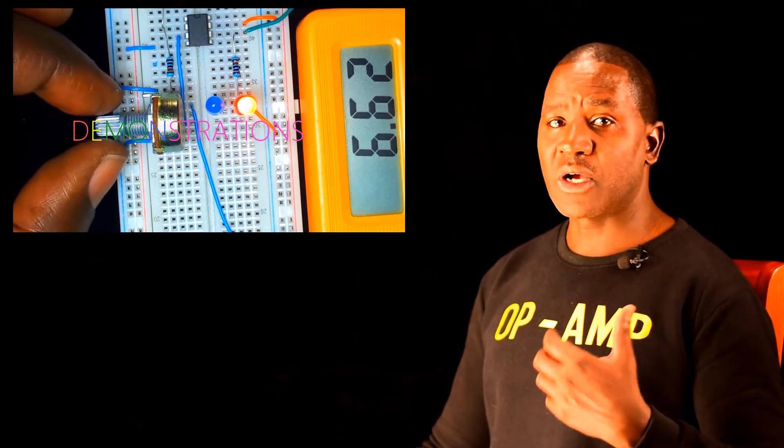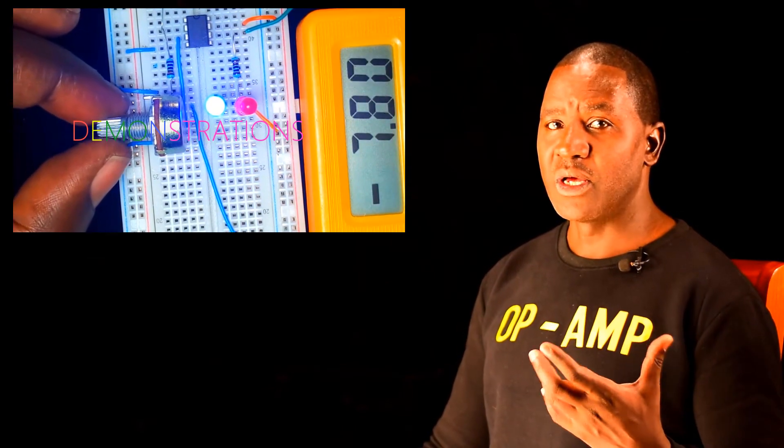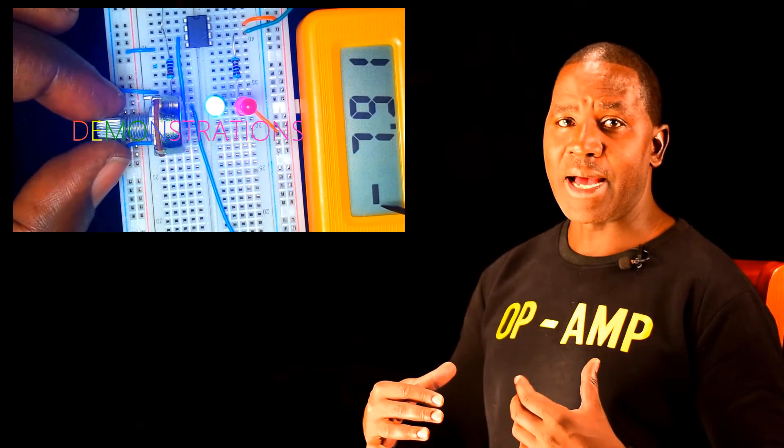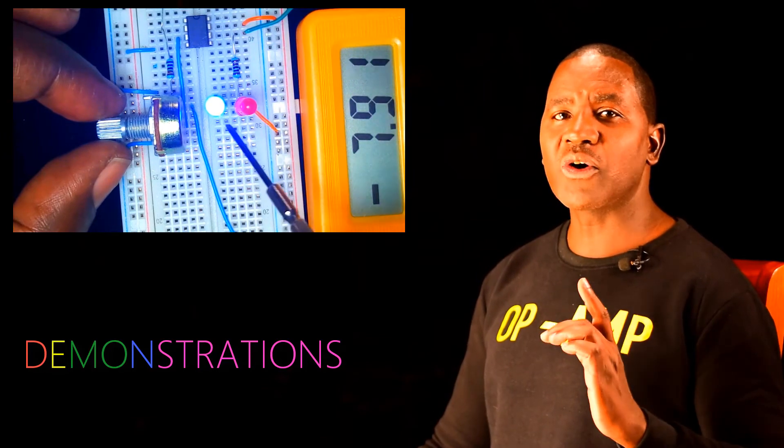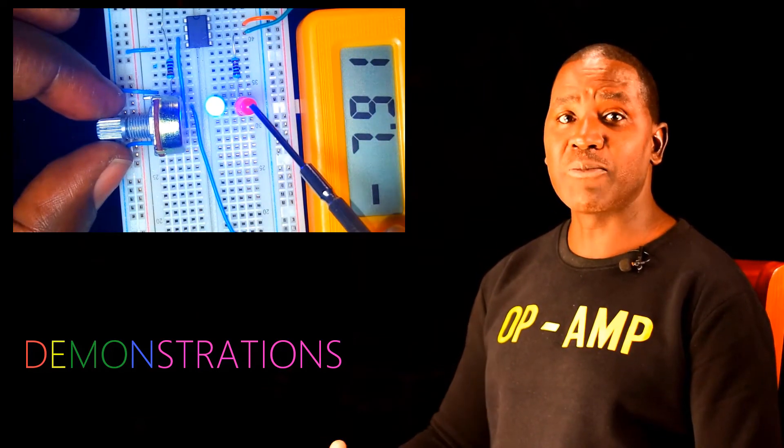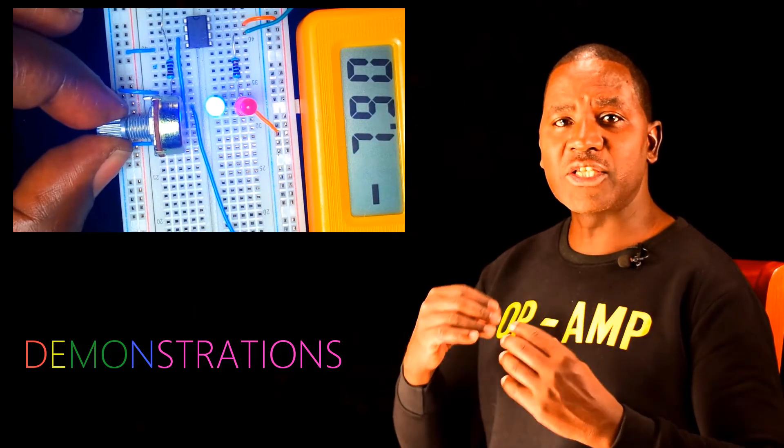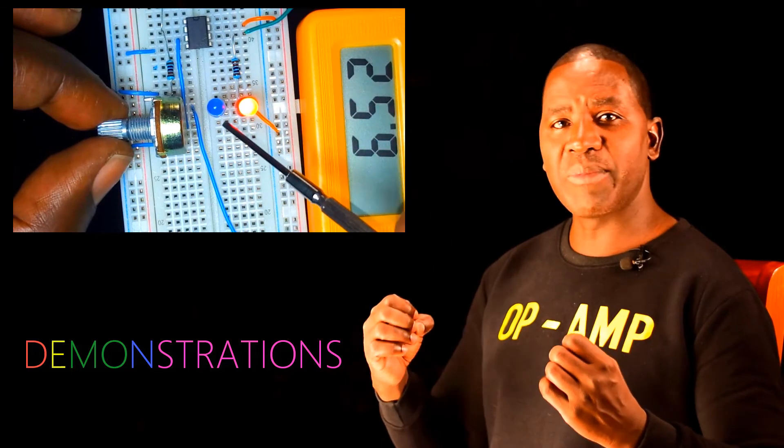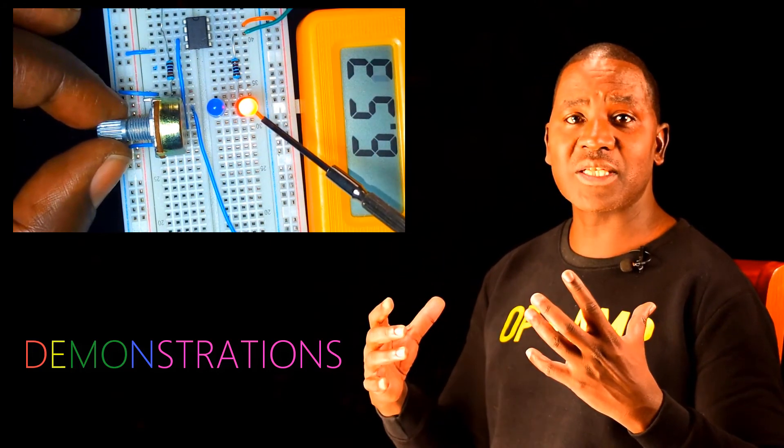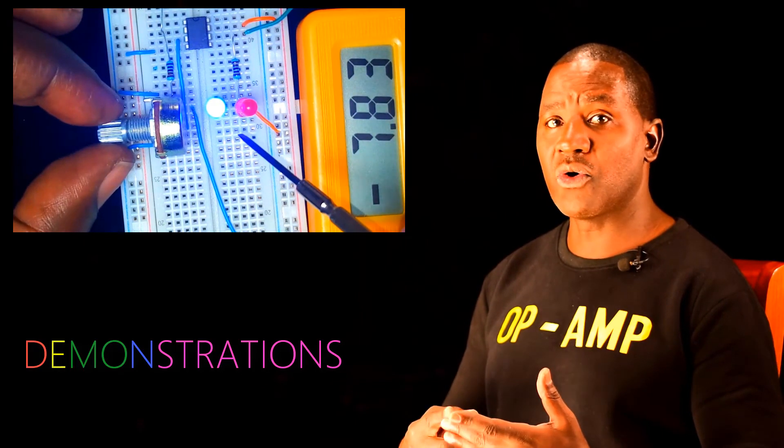The other thing that is unique in my course is that I'm aware that this concept is taught theoretically in very many schools. So I've tried to introduce a lot of demonstrations. In fact, I have devoted one complete section on demonstrations, where I show you how the operational amplifier is connected to various peripheral devices, how it is used to measure certain environmental changes such as temperature, light intensity, pressure, or sound.